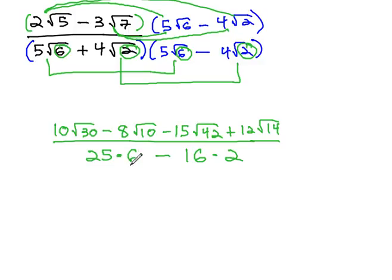All we have to do is the denominator. 25 times 6 is 150. 16 times 2 is 32, and so if we subtract 150 minus 32, our denominator becomes 118.